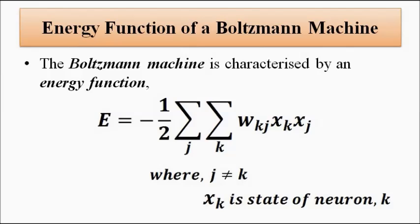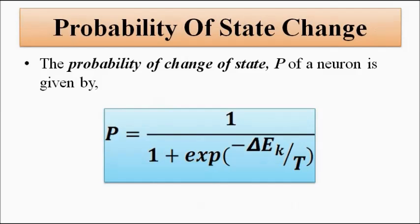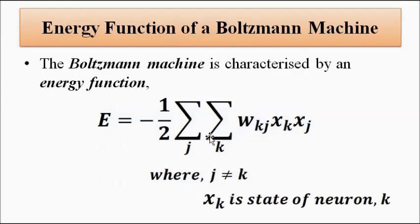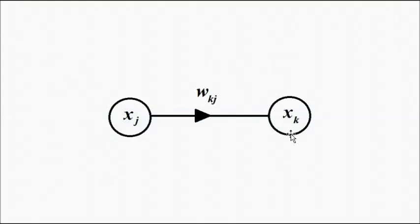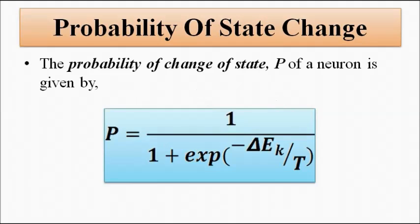There is also a probability of state change of a neuron at any given point in time. The probability that a neuron will undergo a flip — a change of state from +1 to -1 or vice versa — is given by: P = 1 / (1 + exp(−ΔEk / T)), where ΔE is the change in energy associated with that particular neuron k, and T is not practical temperature but a concept called pseudo temperature.